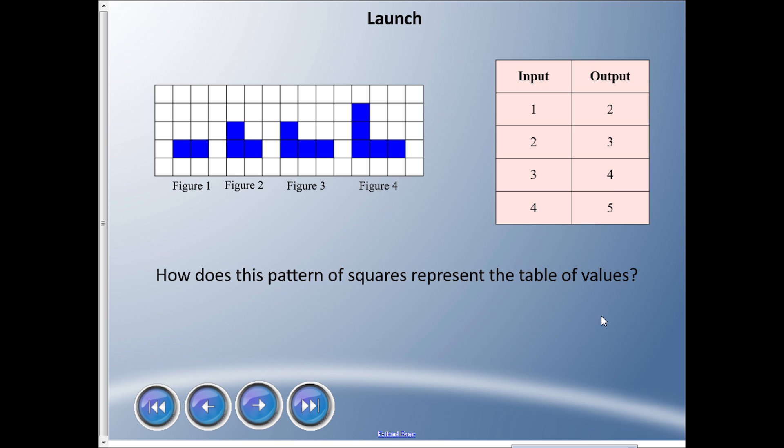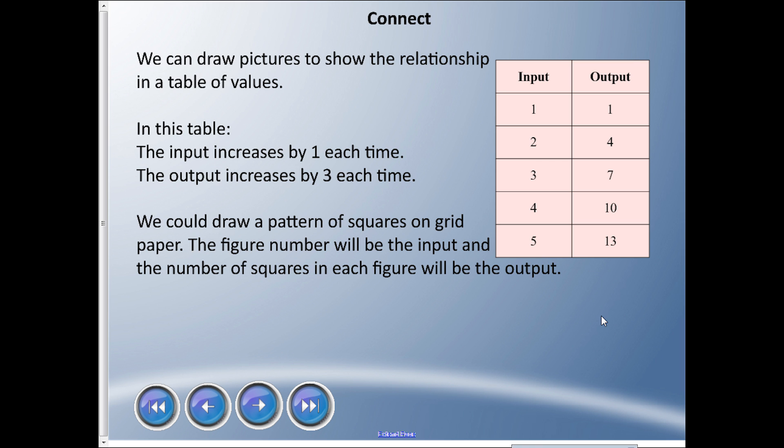Hey guys, welcome back to another fun lesson in math! We're going to continue our unit on patterns and look at graphs and tables today. Here we have a connection between some pictures in a pattern graph and an input-output table. Looking at the two, how do you see this pattern of squares representing the table of values? Can you see the connection between the input-output table and the graph, and if you could draw another one, what would you draw?